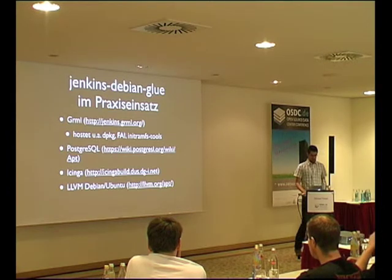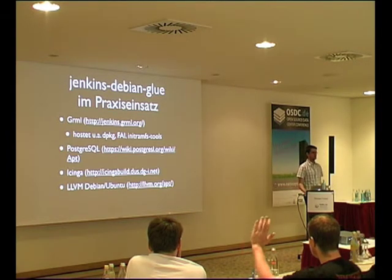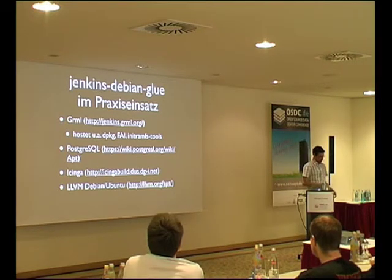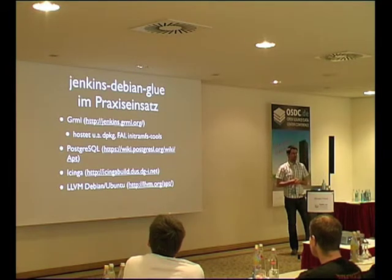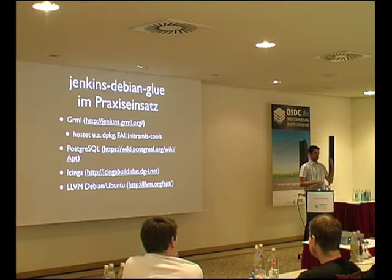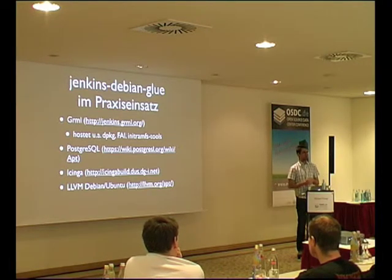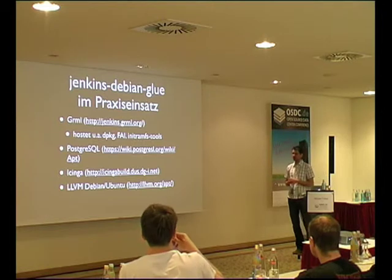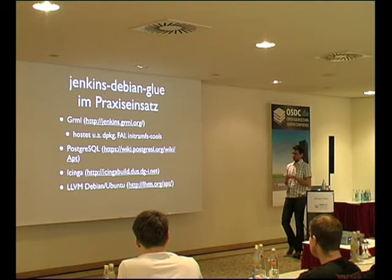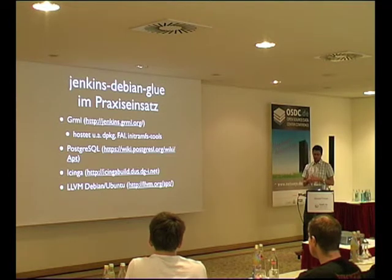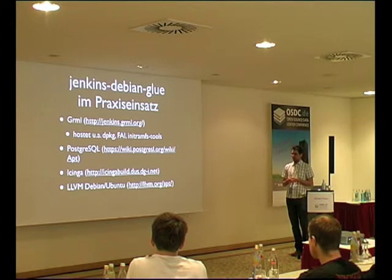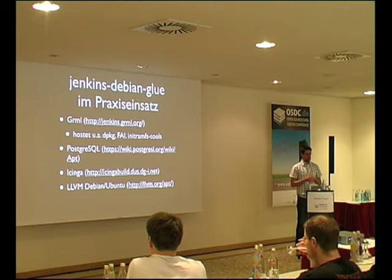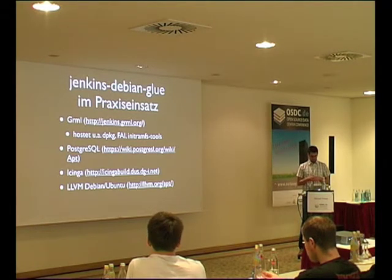Jenkins Debian Glue ist im Praxiseinsatz unter anderem im Grml-Projekt – ich bin im Grml-Projekt aktiv. Wir bauen dort nicht nur Debian-Pakete, sondern auch unsere ISOs. In Jenkins kommen unsere Daily-ISOs raus, jeden Tag für alle Grml-Flavors, und wir machen auch die offiziellen Releases daraus. Mittlerweile verwendet auch das PostgreSQL-Projekt Jenkins Debian Glue, Icinga hat es im Einsatz, und der Betreiber der LLVM Upstream Debian/Ubuntu-Pakete verwendet es ebenfalls.